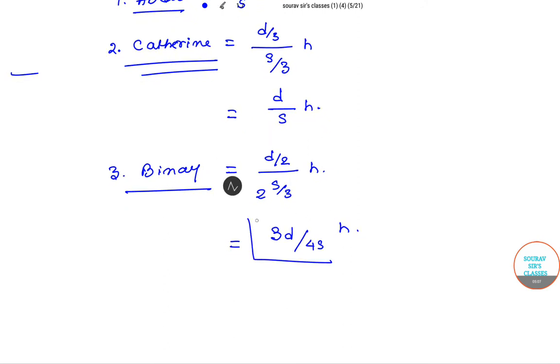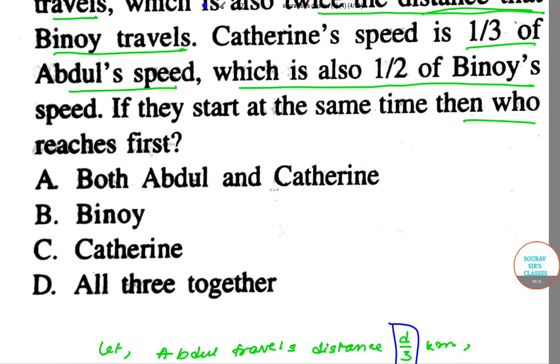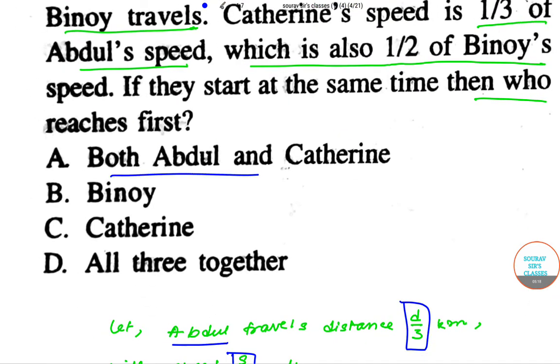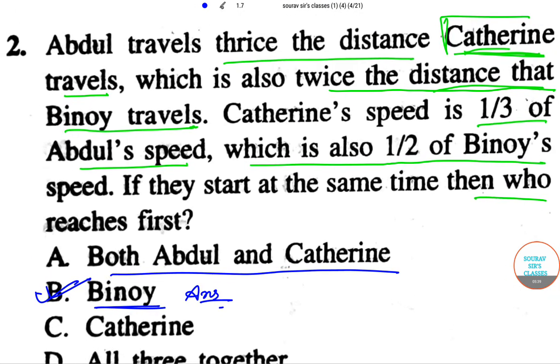Hence, among the three, Binoy will reach first. So let's get back to the question. The options are: both Abdul and Catherine, Binoy reaches first, and I already solved the question, so B will be the answer. So here we are done with this problem. I hope you enjoyed the video. Thank you for watching.